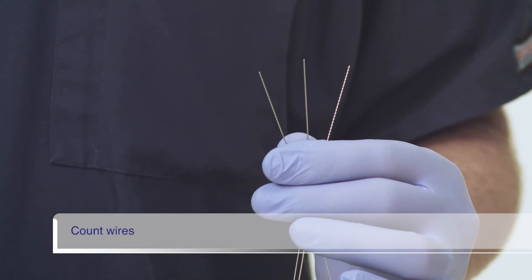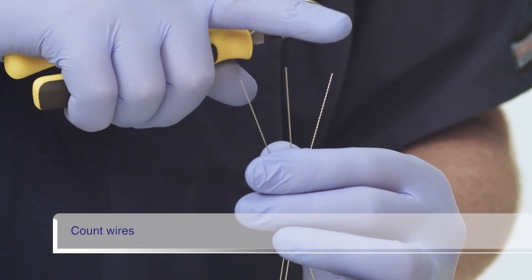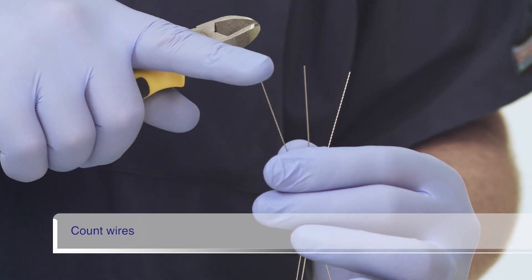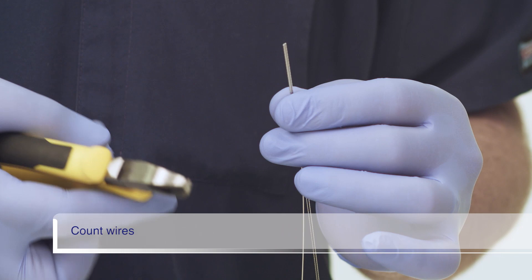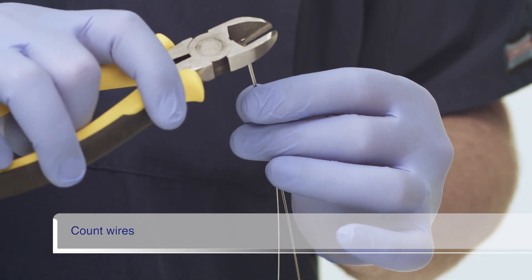Once the wires emerge from the proximal end of the coil sheath, count them to ensure all the wires are present. If any wire ends have become frayed, trim them with the wire cutters.